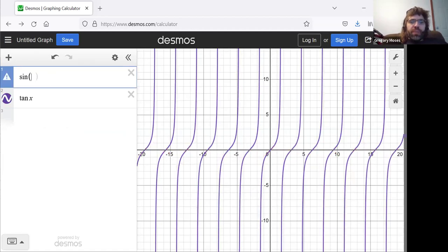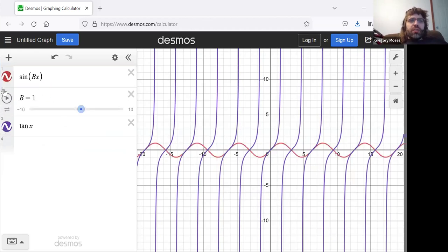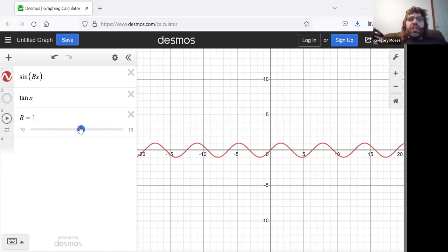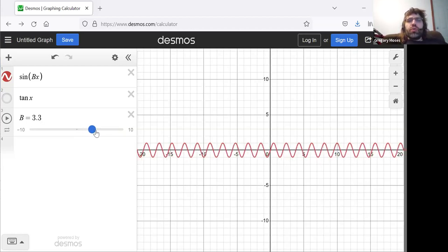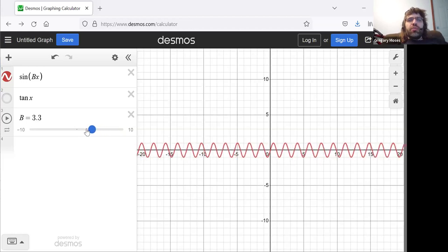And we saw what happens if we have a b in front of the x. This b changes the period of the sine. It stretches it horizontally, or it compresses it horizontally. It goes up, the curve gets smushed horizontally. It goes down, the curve gets stretched out horizontally.